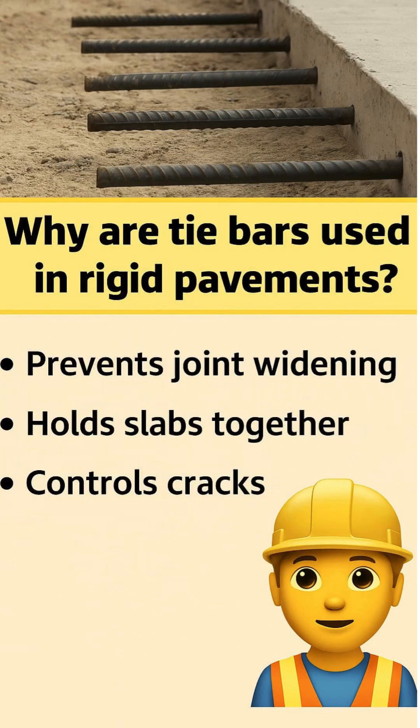Tie bars are small steel bars provided in concrete pavements. They are placed at longitudinal joints to keep the slabs properly aligned and connected.